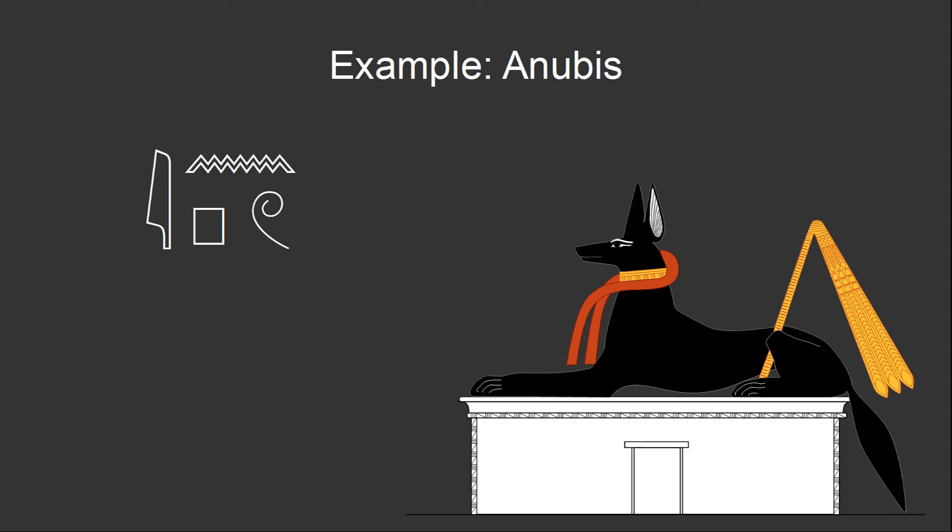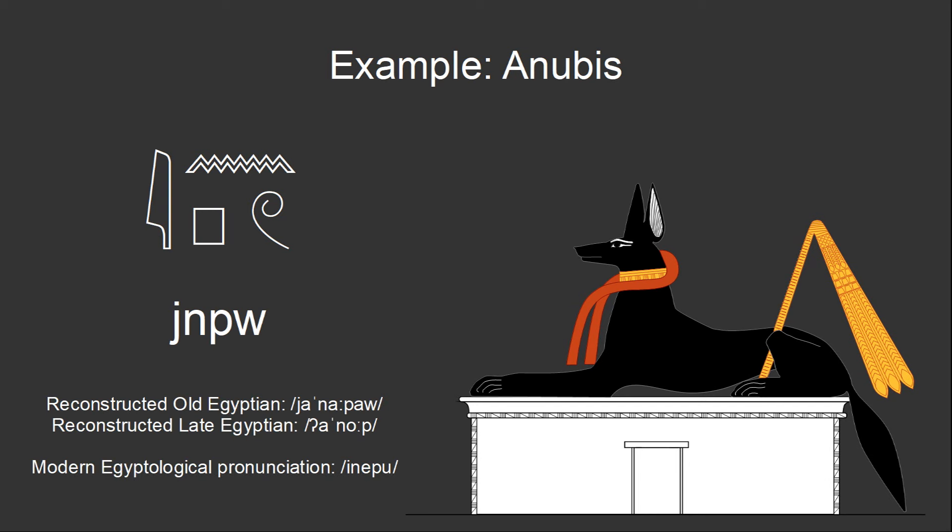This is not meant to be an accurate reconstruction of how these words were actually pronounced. It's just a simple way of turning written words consisting of long clusters of consonants into something that's easily pronounceable. As an example, the name of the god Anubis. The Egyptians didn't actually call him Anubis. This is the Greek version of his name. The written form of the Egyptian name consists of four consonants, Y, N, P, W. The old Egyptian pronunciation is reconstructed as Yannapao, which evolved into the late Egyptian pronunciation of Anubis, which is the origin of the Greek name. The modern Egyptological pronunciation is Inepu.